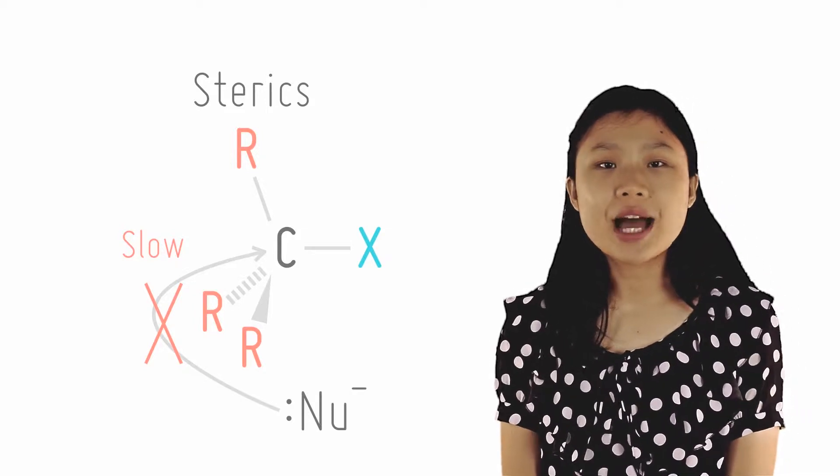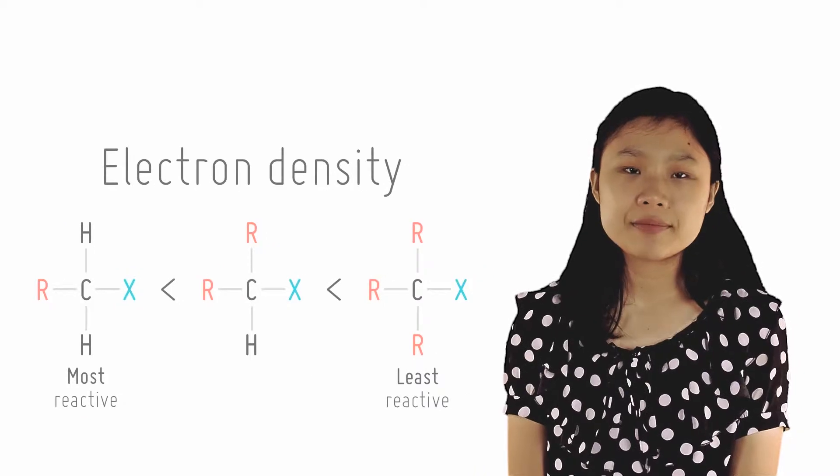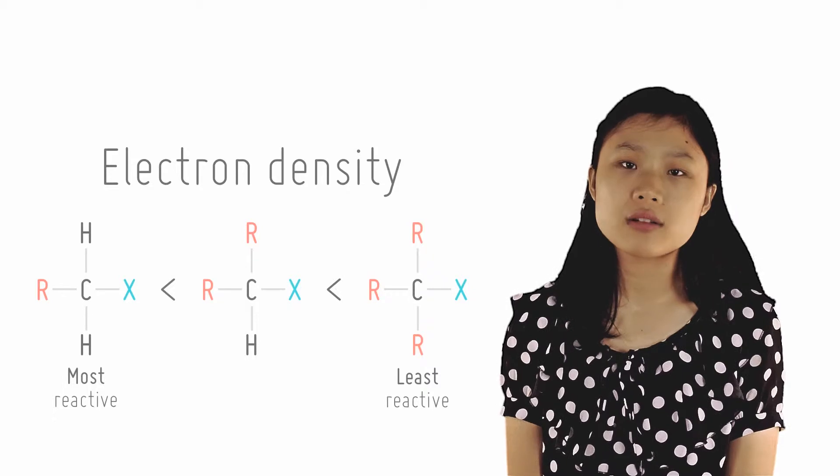Thirdly, how electron-poor the carbon center also matters. Since alkyl groups are electron-donating, they tend to lessen how electron-poor the carbon center is and make it less attractive to nucleophiles.